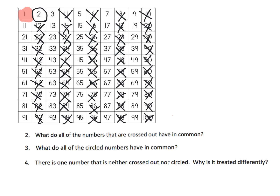Now we're going to circle the 3 and cross off every multiple of 3 — we're going to skip count by 3. So that's 3, then counting 3 more gets us to 6, which is already crossed off. Then 9, which we cross off. Then 12, already crossed off. Then 15, 18, 21, and we keep going. By the magic of video, we finished with the 3s.